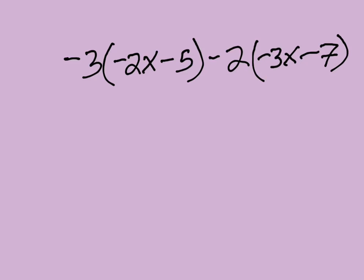So let's see what goes on. Negative 3 times negative 2x is 6x. Negative 3 times negative 5 is 15.